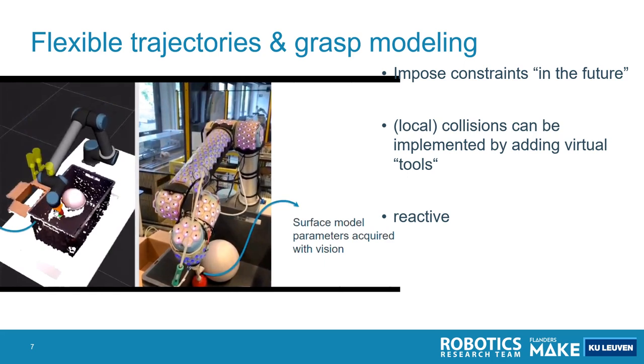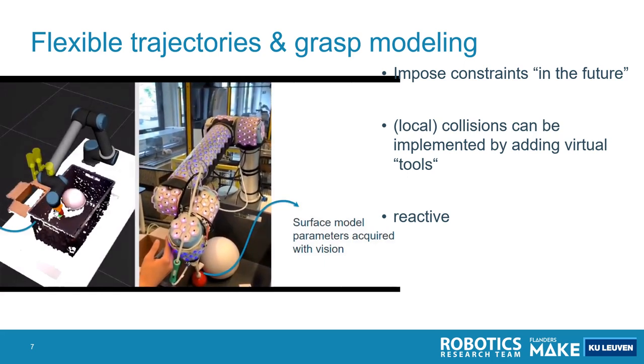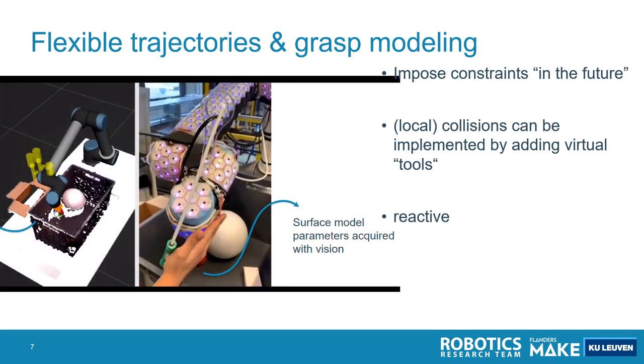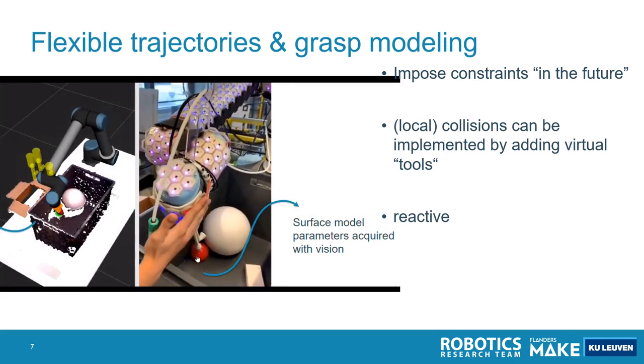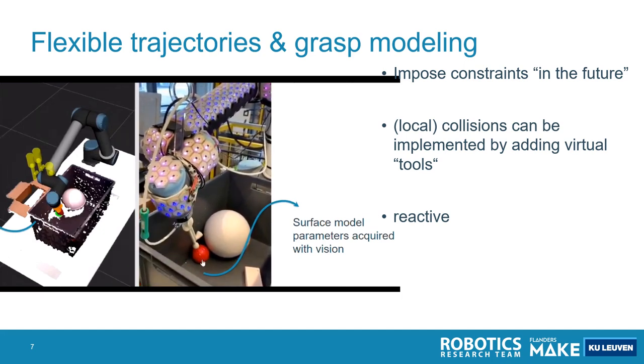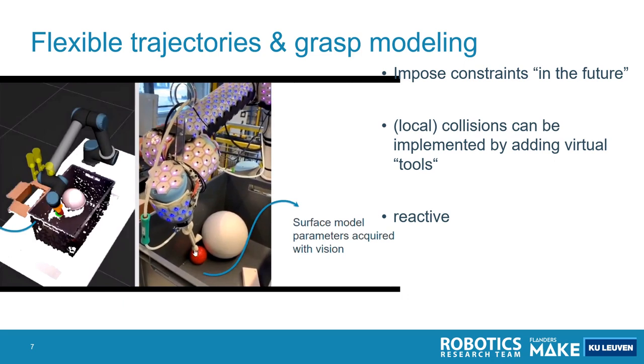And we have objects in a box. These objects are perceived by a vision system and modeled as spheres. And then this sphere has a certain contact model associated with it, and this is applied to the flexible trajectory.